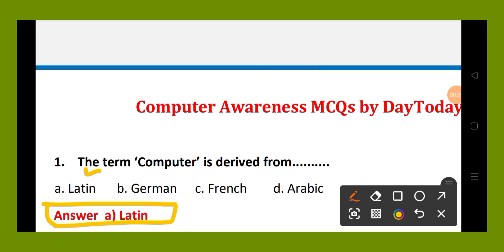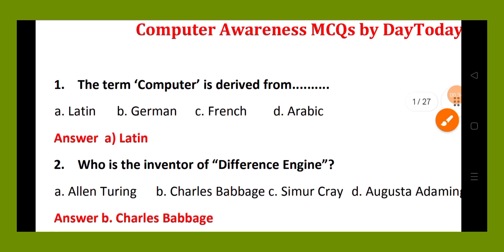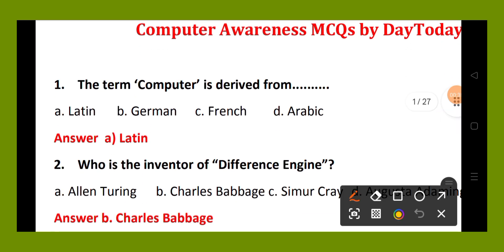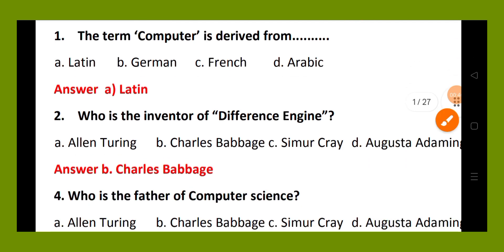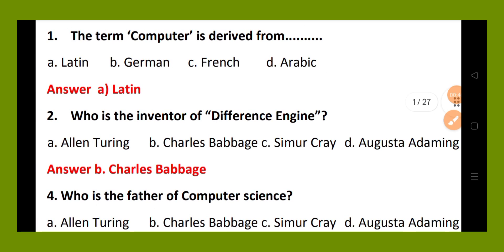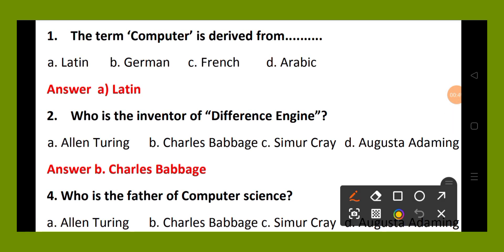Question number 2. Who is the inventor of the difference engine? Option A, Alan Turing; option B, Charles Babbage; option C, Summer Cry; option D, Agastha Edming. The right answer is option B, that is Charles Babbage.